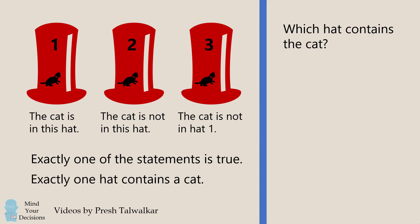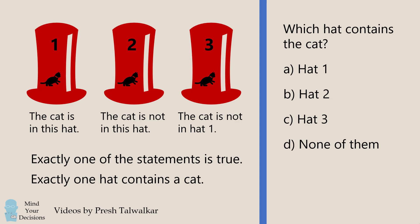and exactly one hat contains a cat. Which hat contains the cat? Is it hat 1, hat 2, hat 3, none of the hats, or there is not enough information?